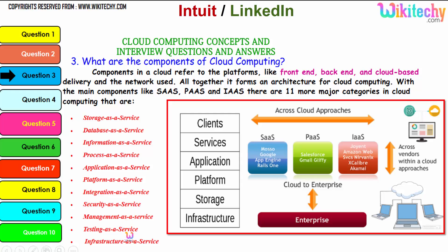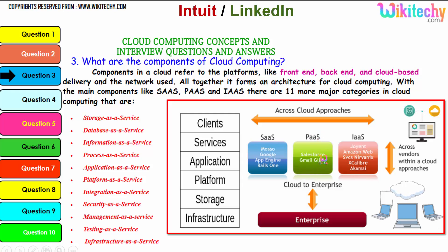These are additional services associated with the three major services that form cloud computing. For Software as a Service, typical examples include App Engine and Google Maso. For Platform as a Service, examples are Gmail, Glyfi, and Salesforce. For Infrastructure as a Service, there are many companies including Amazon Web Services, Delvanix, Excalibur, Akamai, and others.